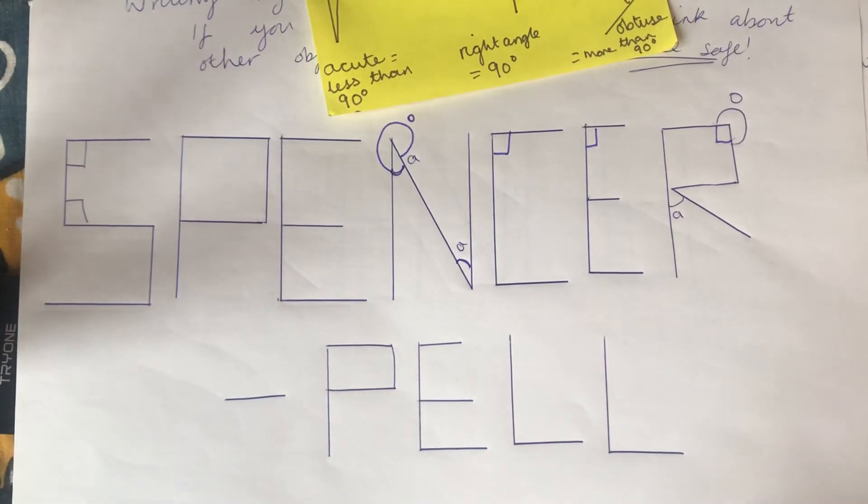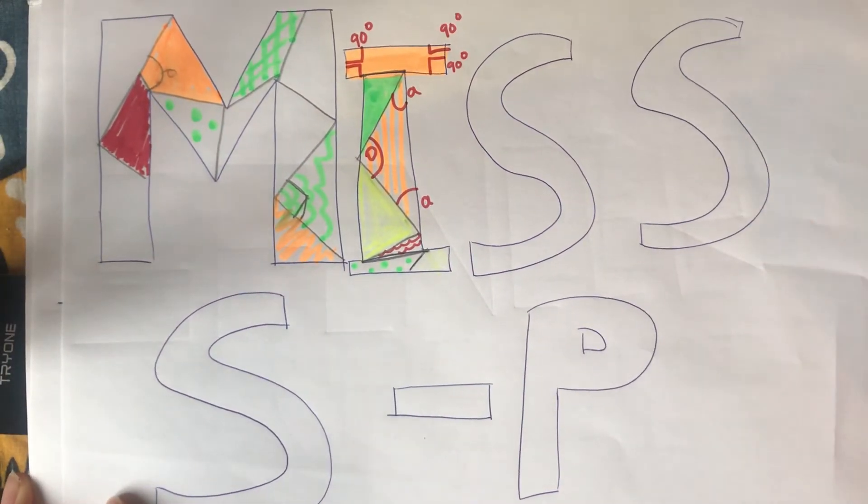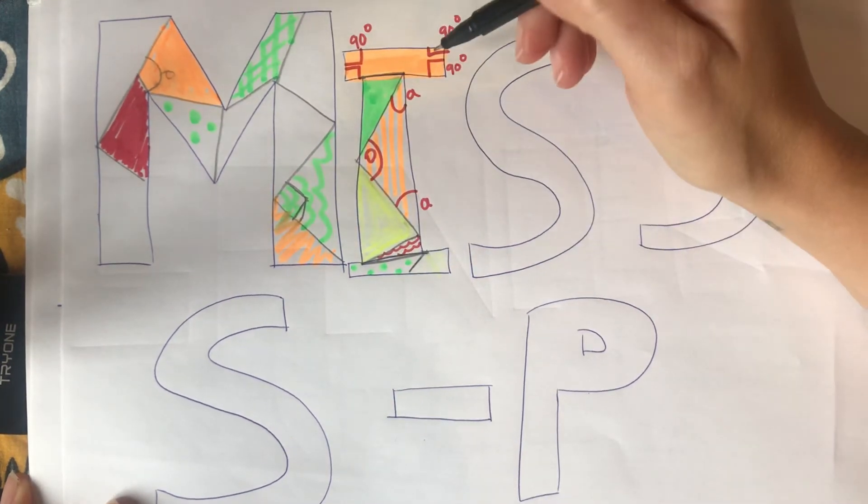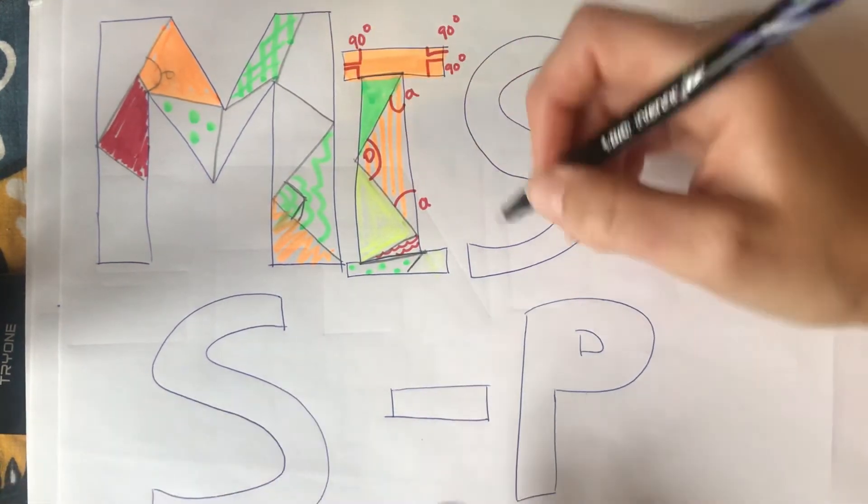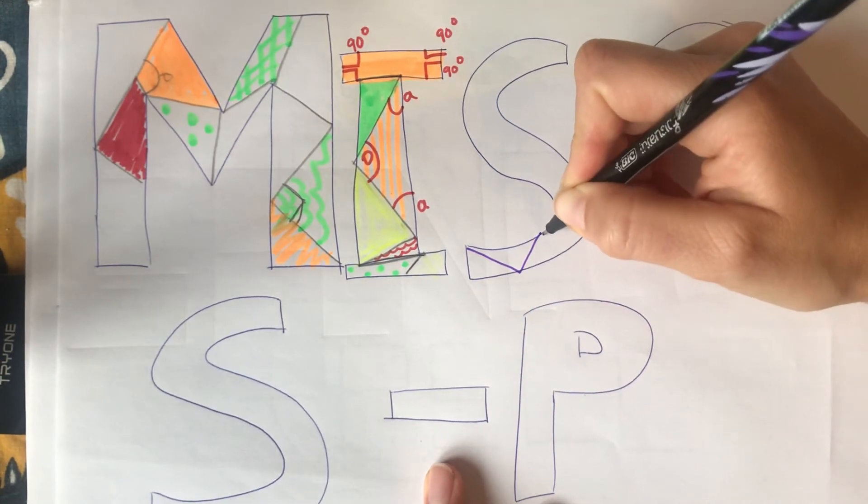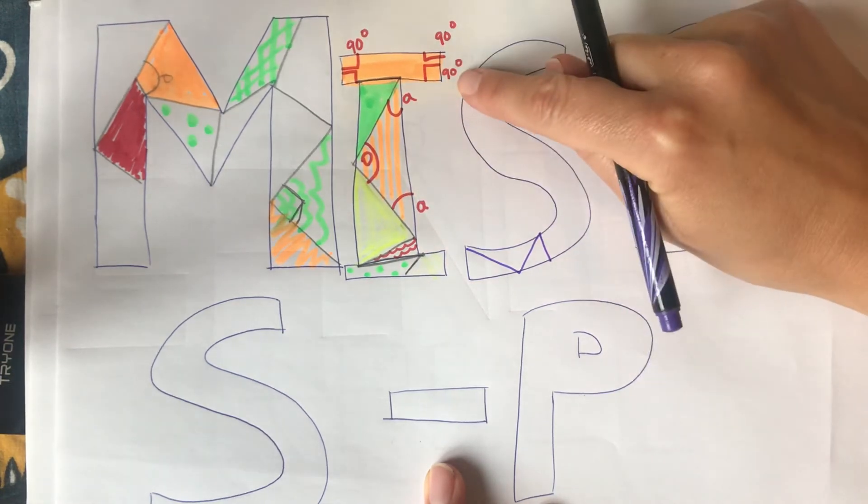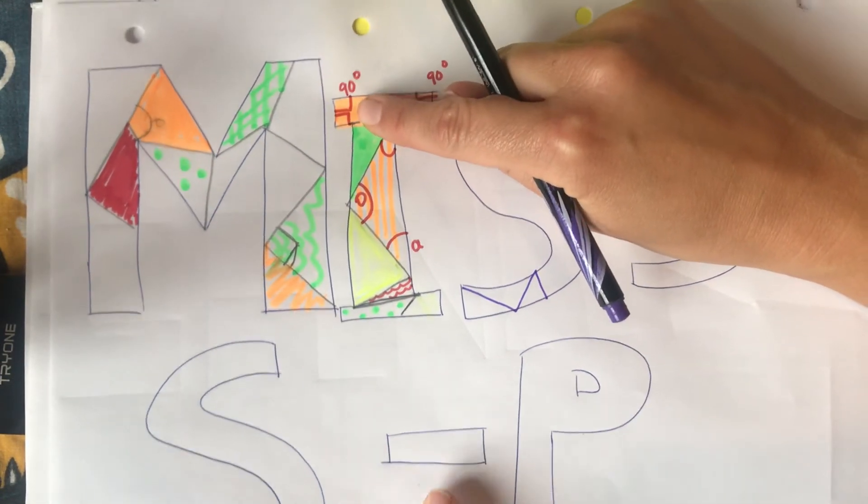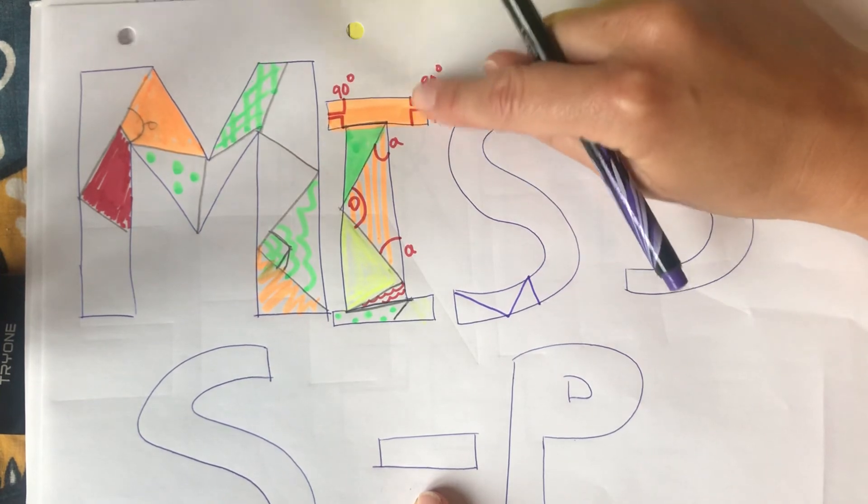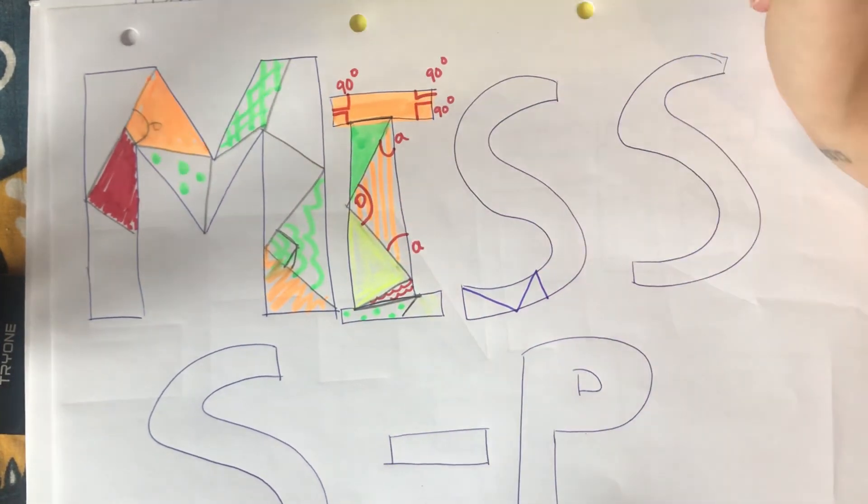What I then did because I was a bit bored is I tried to do my name in bubble writing, and you can colour it in any way you want. And what I tried to do again was I then just started drawing random lines in my name and then I tried to find the angles. So as you can see here I've already labelled some of my right angles 90 degrees at the top of my eye, and then here I found two acute angles and an obtuse angle.